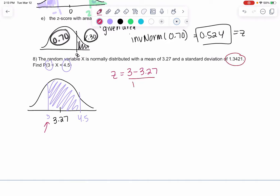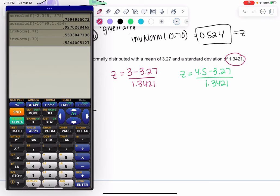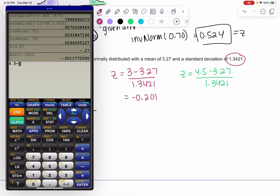And then divide by the standard deviation. For 4.5, we do the same thing. The only thing that changes is the first number. Minus the mean of 3.27, divided by 1.3421. Let's find these two values. We're converting it to the standard normal curve.